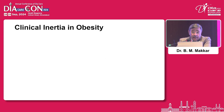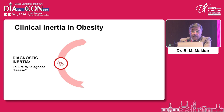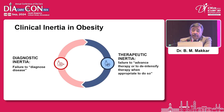So there is clinical inertia in obesity. There are two types of inertia. We have been reading about clinical inertia in diabetes, but in obesity there are also two types: one is diagnostic inertia — the failure to diagnose the disease — and the other is therapeutic inertia — failure to advance therapy or de-intensify therapy when it is appropriate to do so.